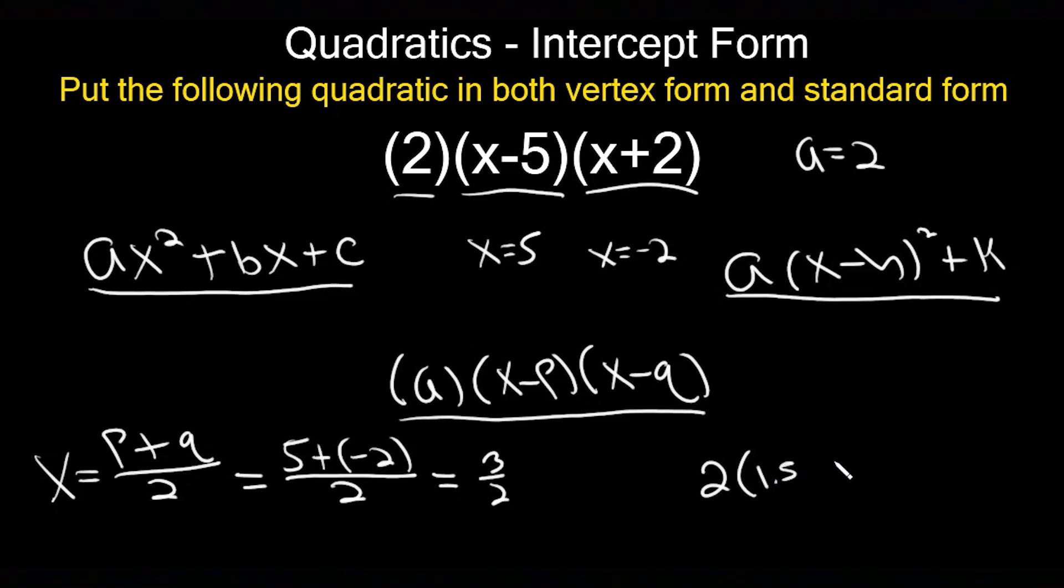So 1.5 - 5, and then 1.5 + 2. You're just going to plug that into your calculator and get the y value of your vertex. When you do that, you should get -24.5. That will be the y value of your vertex.